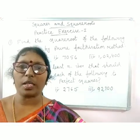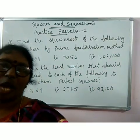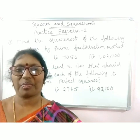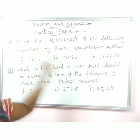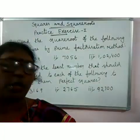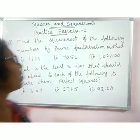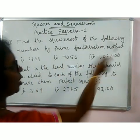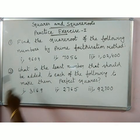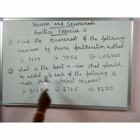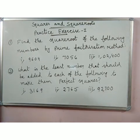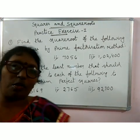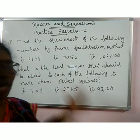Hello, welcome. We have already learnt the chapter Squares and Square Roots, taught in five or six parts. Now it's time for you to do the exercise. For practice exercise one, find the square root of the following numbers by prime factorization method — three bits are given. Second question: what is the least number that should be added to each of the following to make them perfect squares — three bits only.